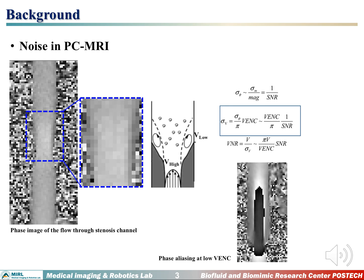Velocity noise in PC MRI is proportional to the phase noise level and the VENC parameter. VENC is a parameter that determines the upper-limit velocity encoding. While a lower VENC can decrease the velocity noise level, it can induce phase aliasing at the high velocity region.